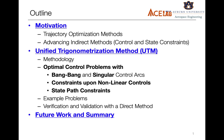First, I would be setting up the motivation for this study. There are different methods to solve trajectory optimization problems, but in this presentation I will be focusing on a particular set of methods known as indirect methods of optimization. These methods have certain issues because of which the research community has not used them a lot, but recently there have been certain advancements that have resolved these issues. So using these advanced indirect methods, I have developed the unified trigonometrization method, or the UTM, which involves six steps.